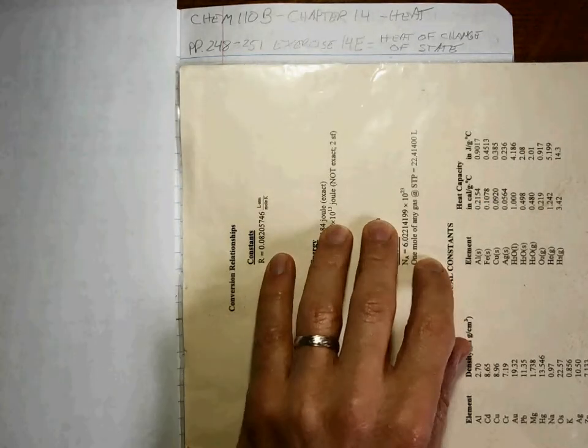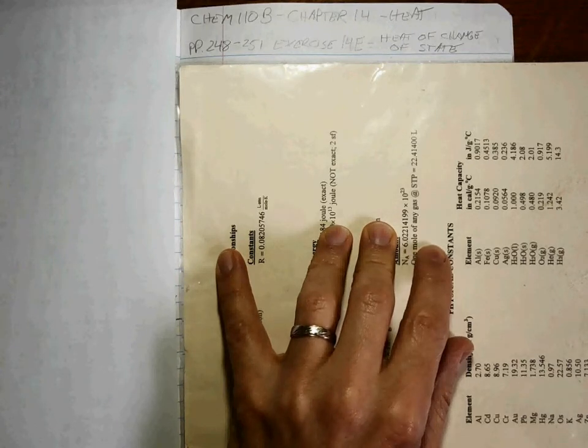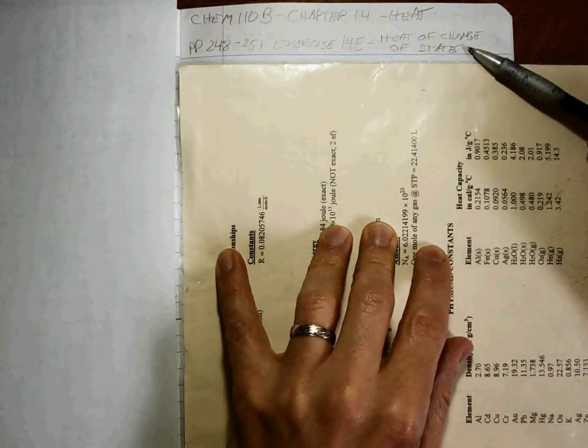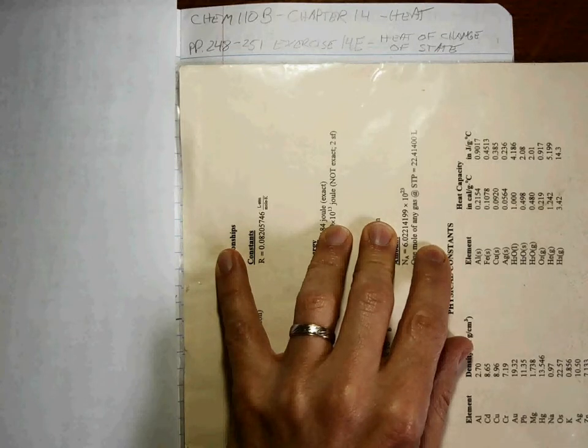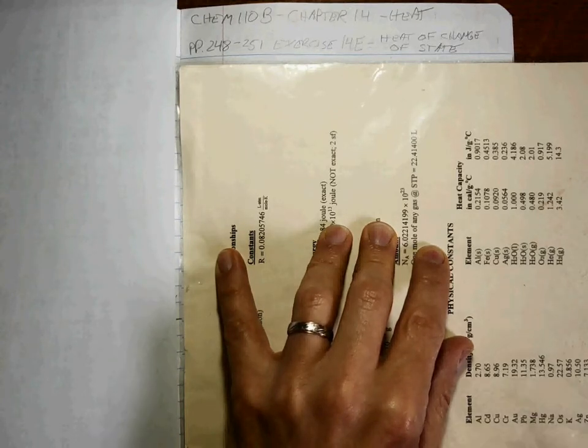Alright, Chapter 14: Heat. We continue on with Exercise 14E, and this has to do with heat of change of states of matter. The way that you need to think about this always is using your chemical intuition.